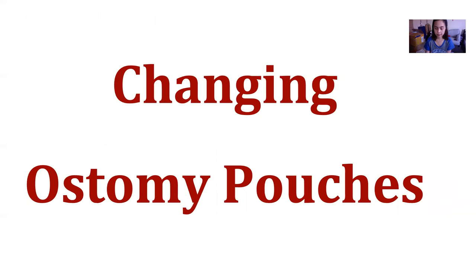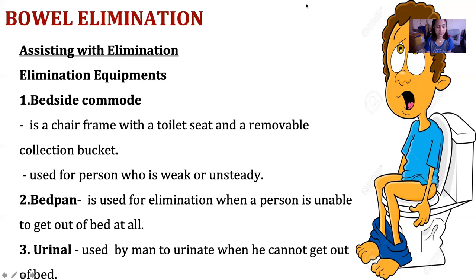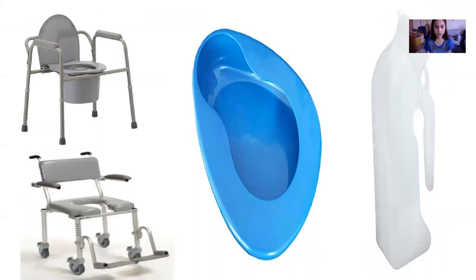I will teach you how to change ostomy pouches. For elimination equipment, we use a bedside commode, a bedpan, and a urinal. The bedside commode is like a toilet seat with a removable collection bucket — it's a chair with an opening so the patient can eliminate. A bedpan is used for elimination when a person is unable to get out of bed, mainly when a patient wants to defecate or when a female patient needs to urinate in bed. A urinal is used for male patients who need to urinate while in bed.